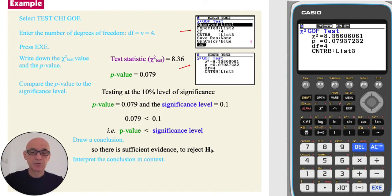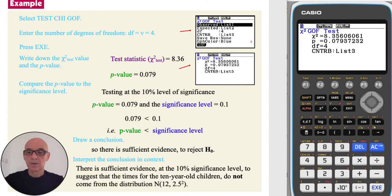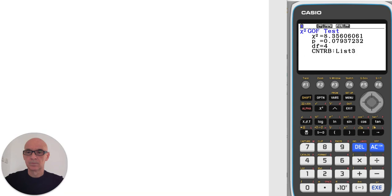And interpreting this conclusion in the context of the question, we conclude that there is sufficient evidence at the 10% significance level to suggest that the times for the 10-year-old children do not come from the normal distribution stated.